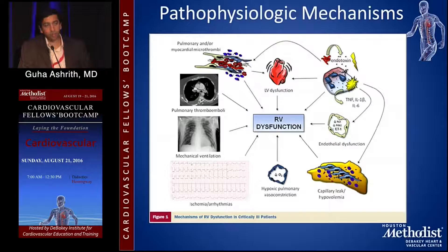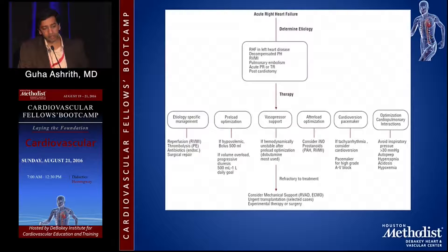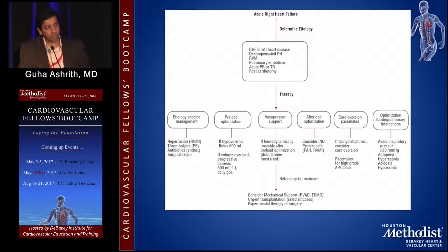Pathophysiologic mechanisms depend on why patients have RV failure. If it's from PE, it's due to pulmonary microthrombi; if it's from RV infarct, it's myocardial. This leads to a cascade of inflammatory pathways causing myocardial dysfunction. When treating RV failure, you must determine etiology so you can treat appropriately — if they have RVMI, take them to the cath lab for primary PCI; if PE, consider thrombolysis; if post-cardiotomy, assess whether a graft went down and consider revascularization.